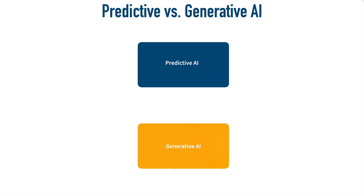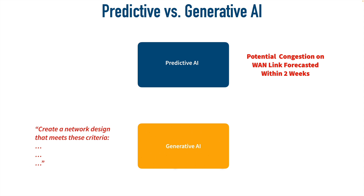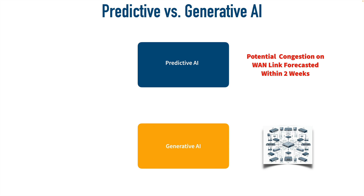Let's see how we might apply this in our networks. With predictive AI, we might be able to forecast network issues. Maybe we put in network performance data collected over a period of time, and based on that, AI might say: based on your current trends, we forecast that your WAN link might become congested within the next two weeks — you might want to look at some load balancing or increasing your bandwidth capacity. So with predictive AI, we're predicting something in the future based on previous events. With generative AI, we can create something original — for example, maybe we need assistance creating a network design. After we have properly trained our model, we might be able to say: create a network design that meets the following criteria — so many clients, so many subnets, support for so many wireless devices. Generative AI might then give us a topology of a suggested network.